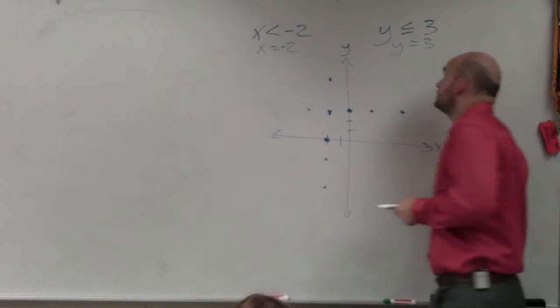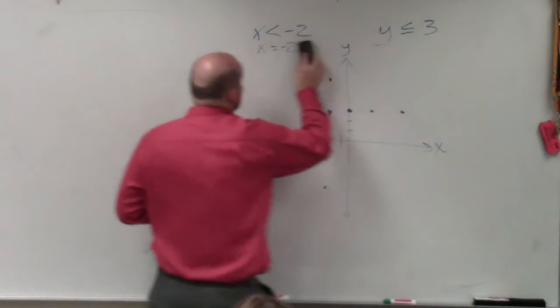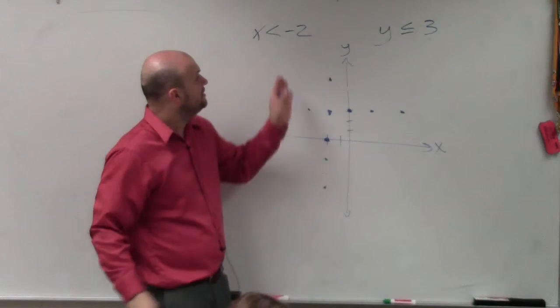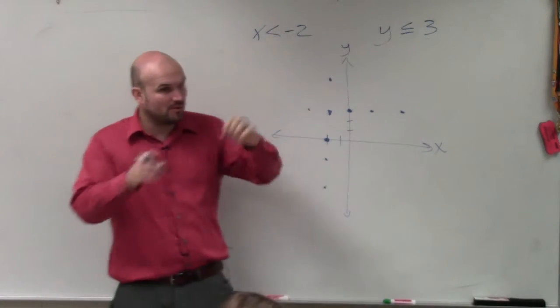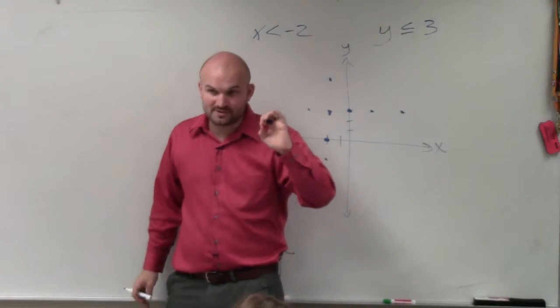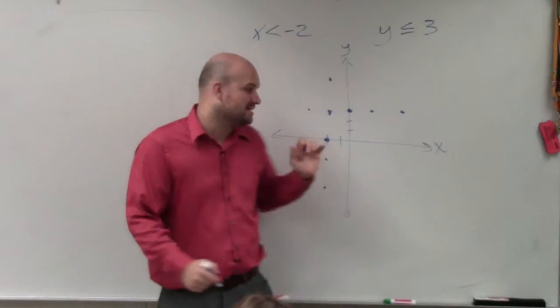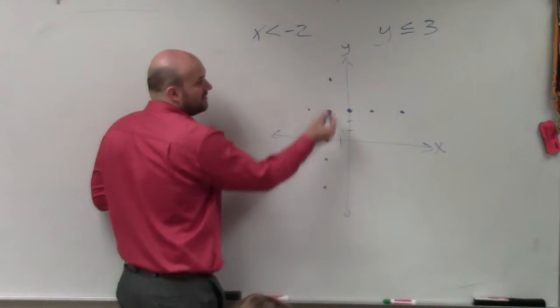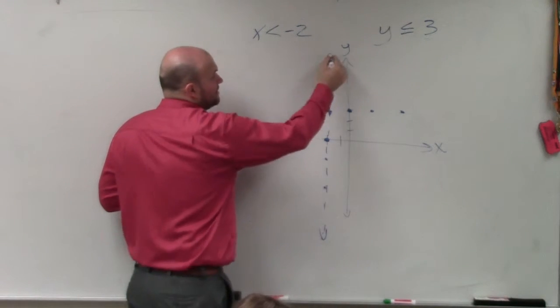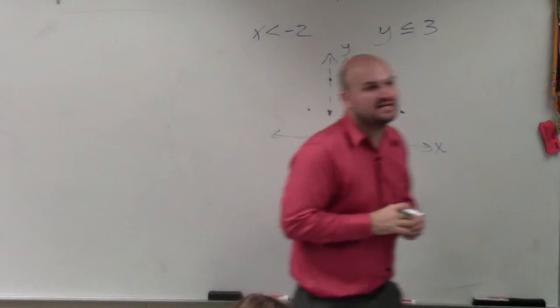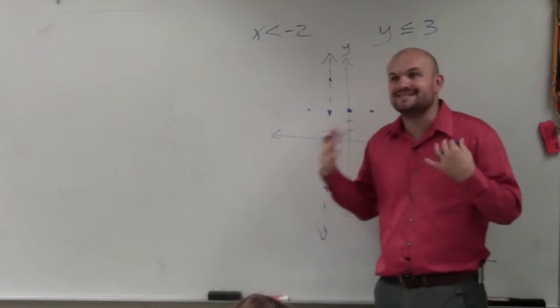Now we have to forget about the equations and go back to what we're actually supposed to graph, which is the inequality. So if this says x is less than negative 2, remember less than, remember when we graphed linear inequality, that was an open circle. Well, when we're graphing lines, rather than an open circle, you can see we have a line. But we're going to create a dashed line. Because any point that's on the dashed line is not a part of the solution. It's not included.